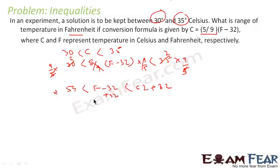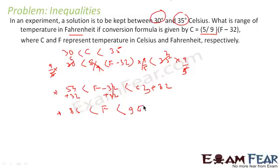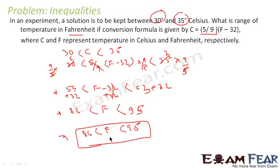We can add a positive number to all sides. So 54 plus 32 gives 86, and 63 plus 32 gives 95. So what we get is F is greater than 86 and less than 95.